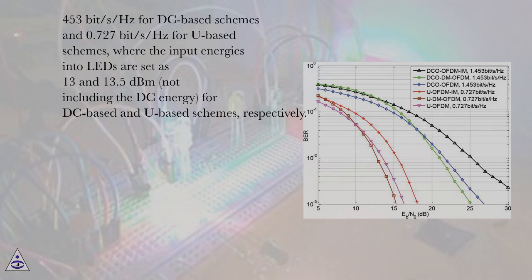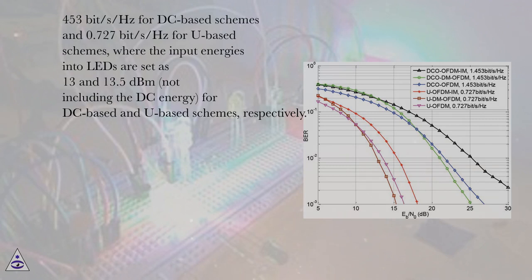453 bits per second per HC for DC-based schemes and 0.727 bits per second per HC for U-based schemes, where the input energies into LEDs are set as 13 and 13.5 dBm, not including the DC energy, for DC-based and U-based schemes, respectively.